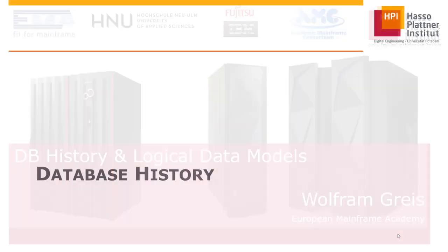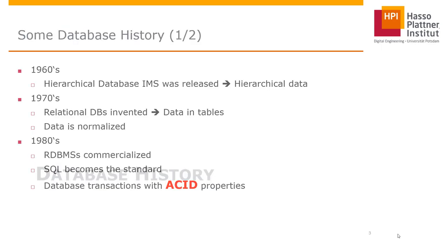Let's start with the database history. It began in the 1960s. The hierarchical database IMS by IBM was invented and released. IMS is a typical hierarchical database, meaning all the data in the IMS database is structured in a hierarchical order. I will get back to that when I talk about IMS in one of the next video clips.